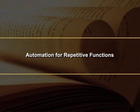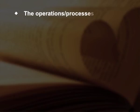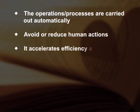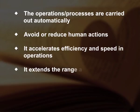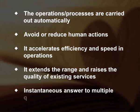Automation for repetitive functions: in a library, a number of repetitive jobs are involved that take away most of the work time of the staff. Automation provides fantastic accuracy, precision, performance and speed, bringing under control massive information with huge storage capacity and interpretation capabilities. The main characteristics of an automated library system are: operations and processes are carried out automatically; it avoids or reduces human actions; it accelerates efficiency and speed in operations; it extends the range and raises the quality of existing services; and provides instantaneous answers to multiple queries.